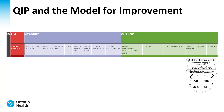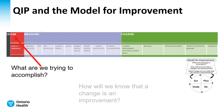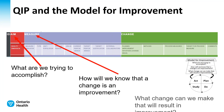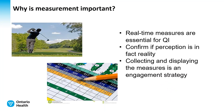Here is where it shows on the work plan: what are we trying to accomplish is your aim; how will we know that change is an improvement is under measure; and today's video focus — what change can we make that will result in improvement — is in the green plan section, Question 3.